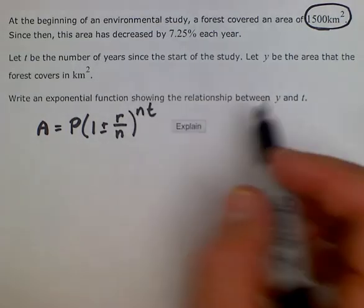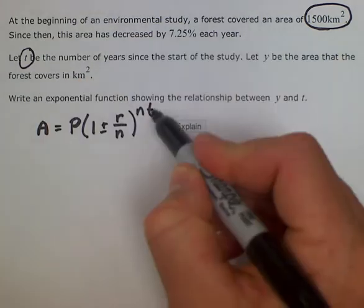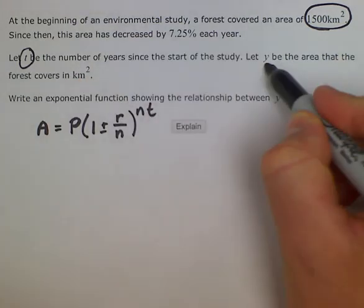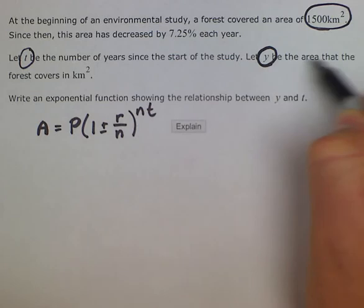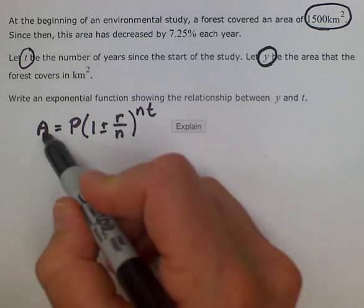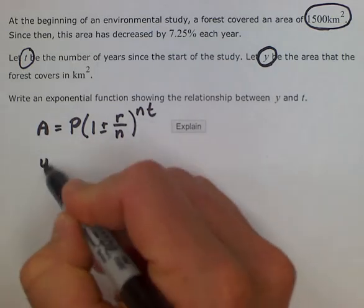So all we need to do is change up the variables just a little bit. It says that it does want us to use t, so we'll go ahead and continue to use t. But it also wants us to use y to be the area the forest covers which is going to be the total amount. So we'll go ahead and change A to y.